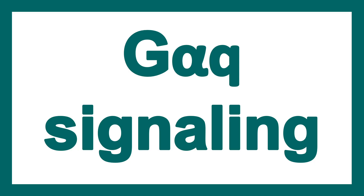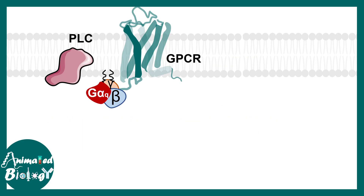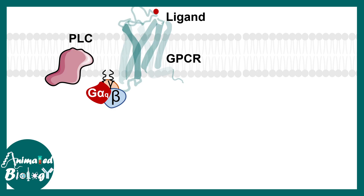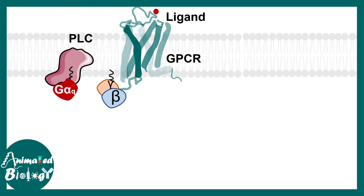Now let's talk about GαQ signaling. Again the main difference lies in the G alpha subunit — in this case it is the GαQ subunit. The GαQ subunit is associated with the GPCR but does not activate adenylate cyclase. Instead it interacts with phospholipase C. Upon activation, the GαQ subunit activates phospholipase C, which can cleave specific lipids in the plasma membrane and generate second messengers like IP3 and diacylglycerol (DAG).